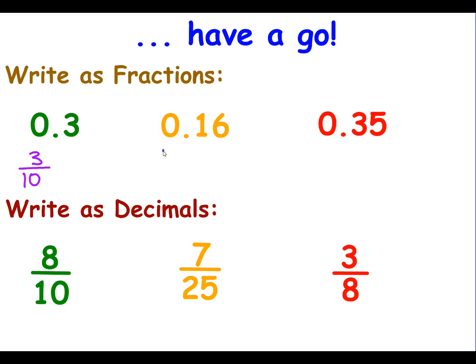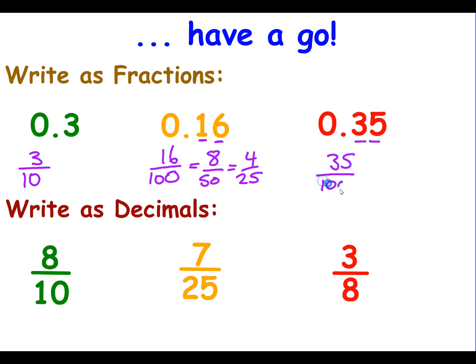Let's look at the answers for decimals to fractions. For 0.3: it means 3 over 10. Can I simplify? No — no number divides into both. For 0.16: it means 16 over 100. Divide top and bottom by 2 to get 8 over 50, then divide by 2 again to get 4 over 25. So 0.16 is the same as 4 over 25. For 0.35: that's 35 over 100. 5 divides into both — 5 goes into 35 seven times and into 100 twenty times — giving 7 over 20. 7 is prime and doesn't divide into 20, so 0.35 is the fraction 7 over 20.